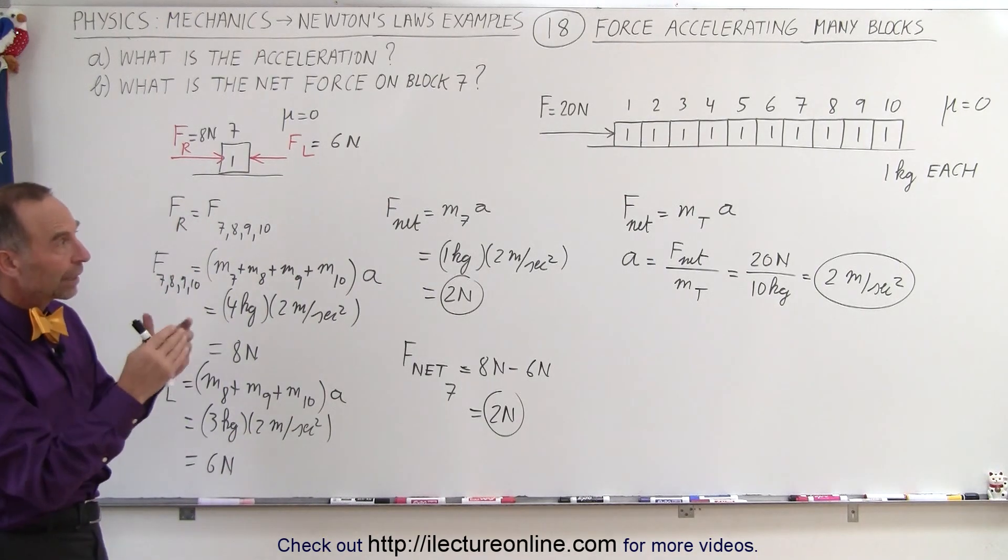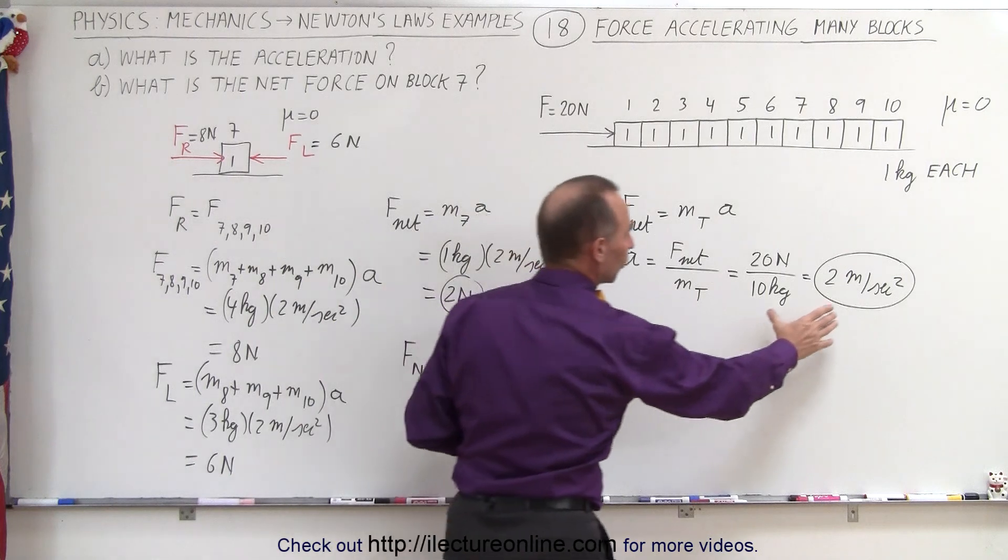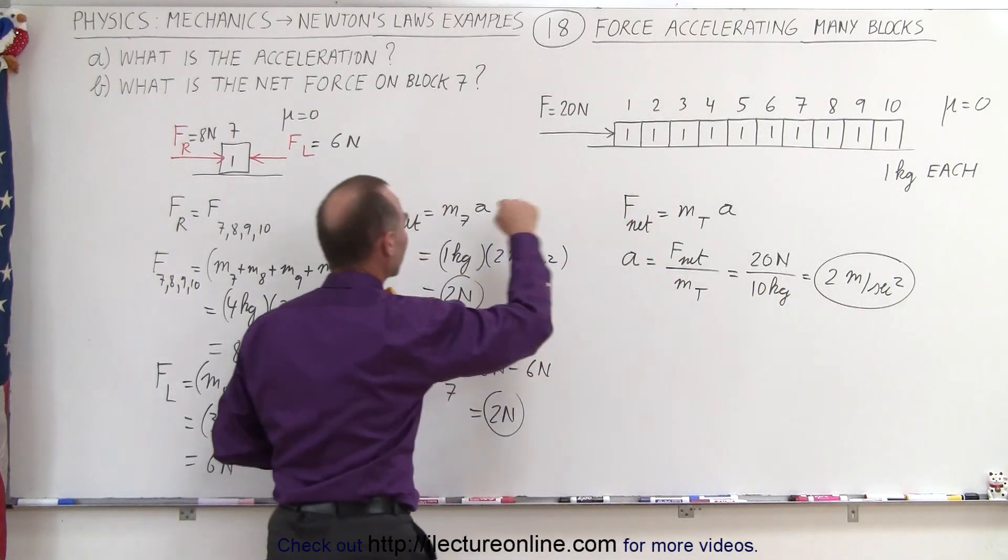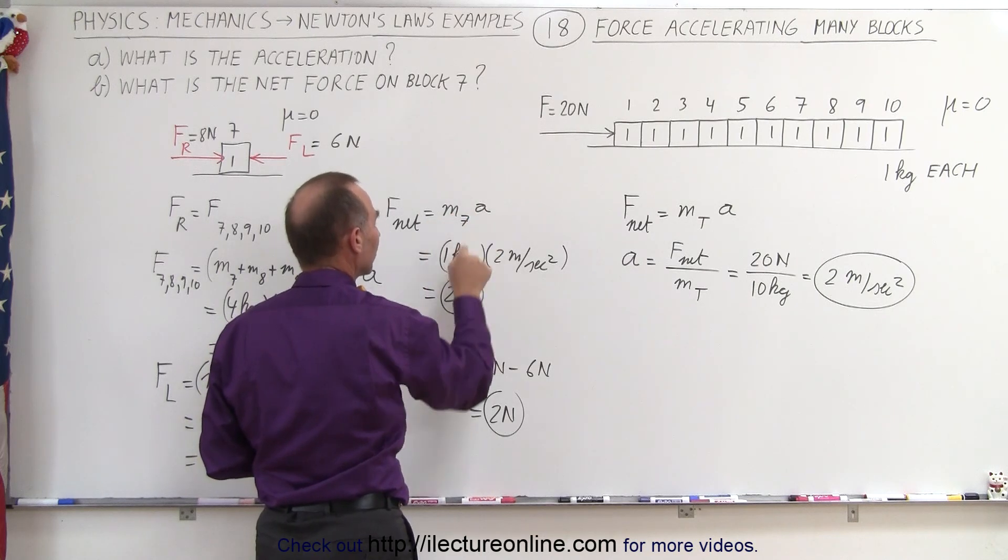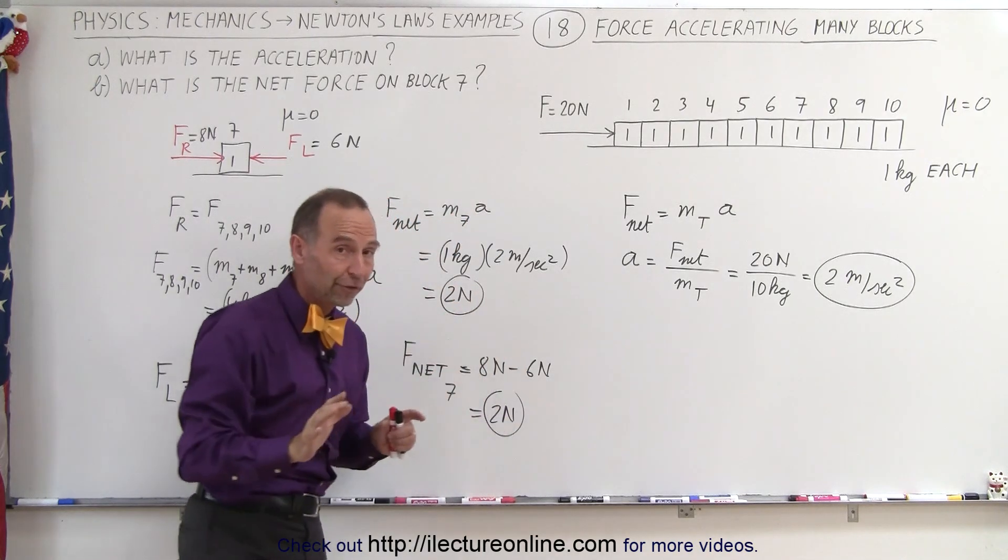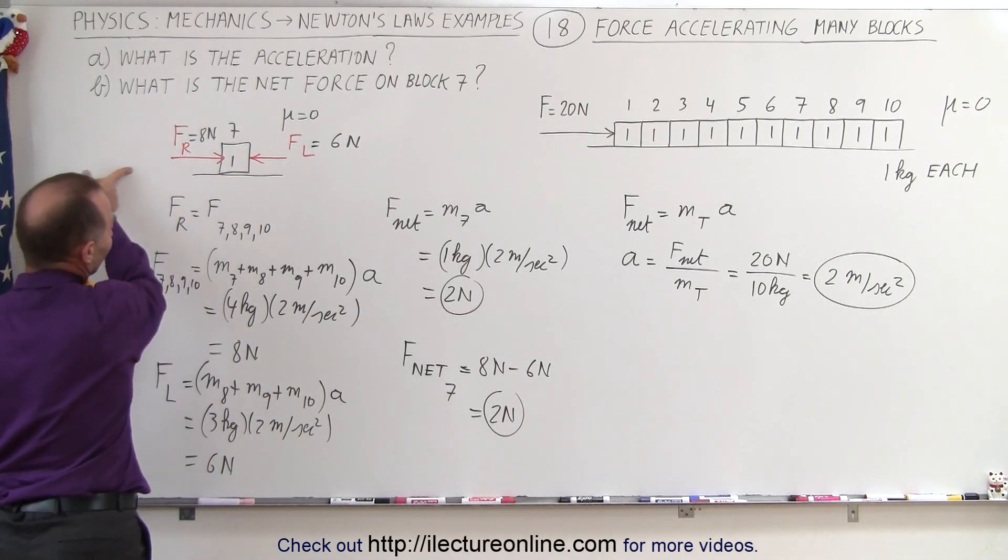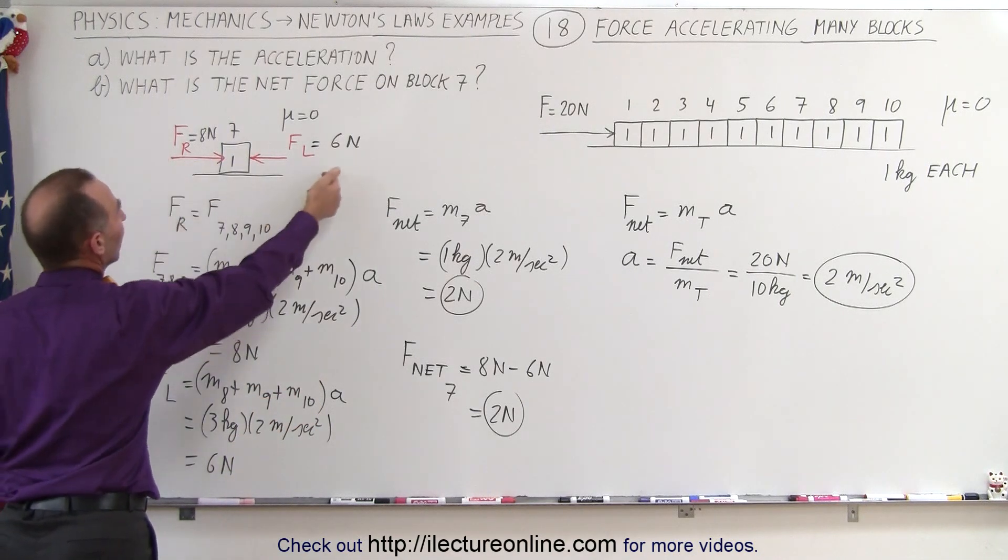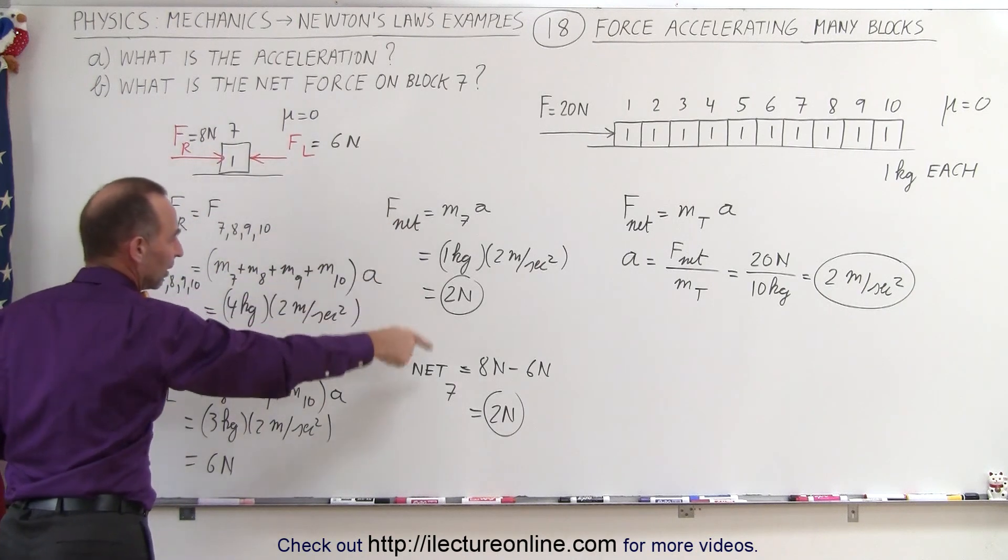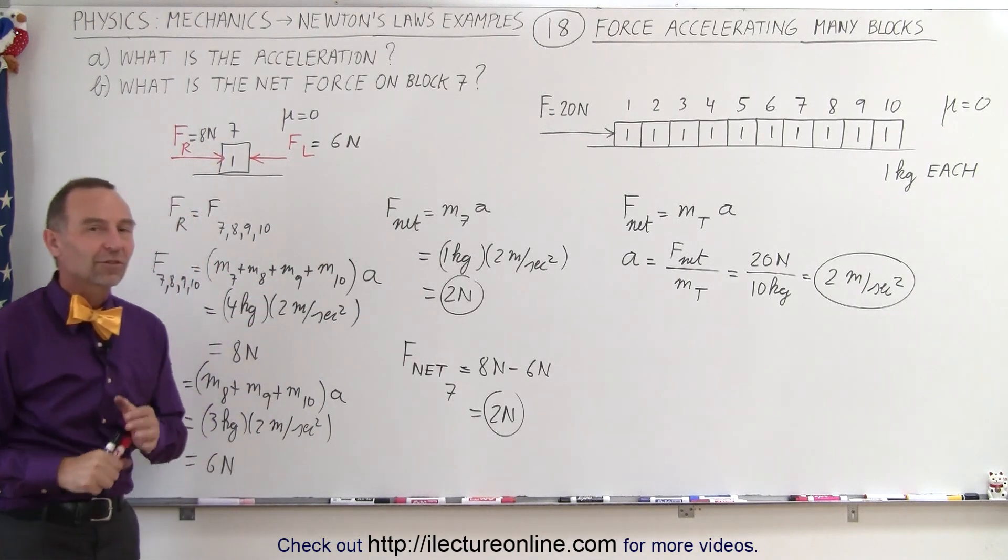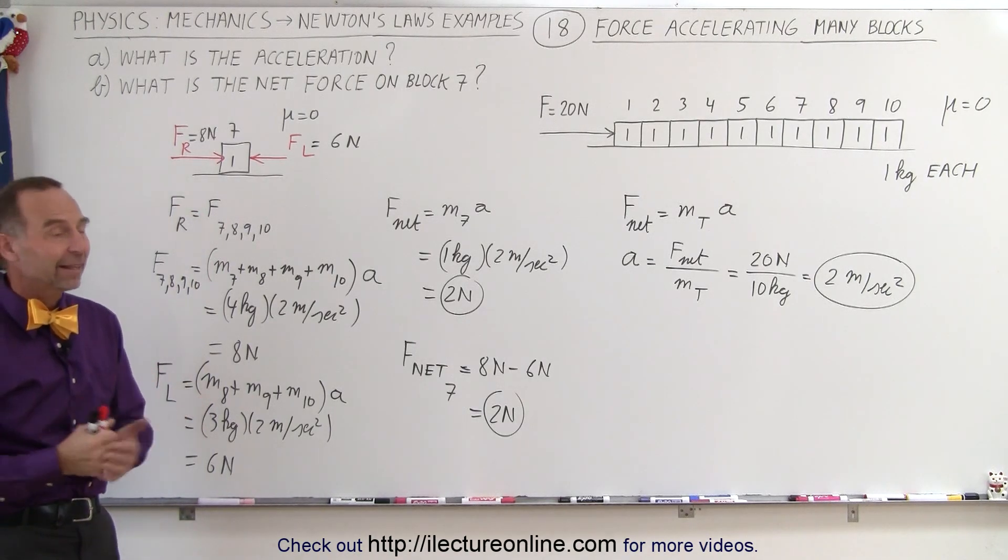So that's how you want to look at a multi-system like that. You can find the acceleration of the whole system, then use that acceleration where you say the F net on any one component is its mass times acceleration, which is 2 newtons. Again, no friction involved here, or we can say it's the force pushing towards the right minus the force pushing to the left, 8 newtons minus 6 newtons. Again, the difference gives you the same result, the net force on that particular block, and that's how it's done.